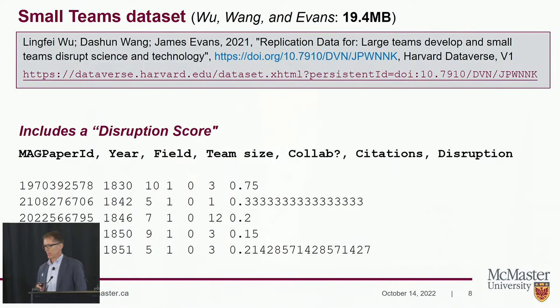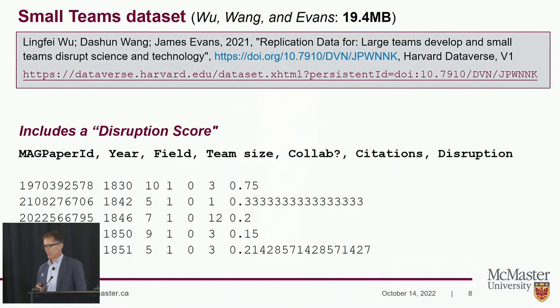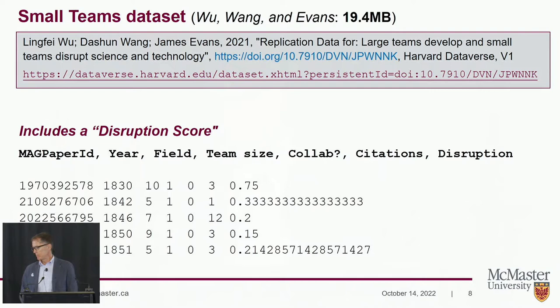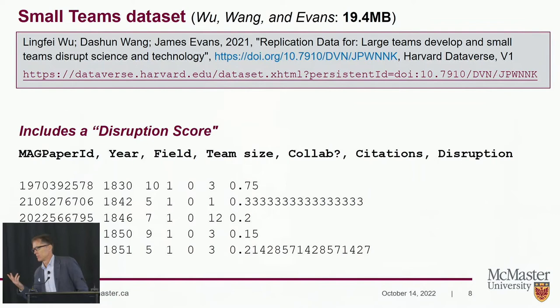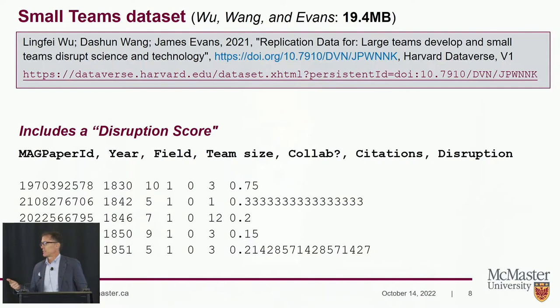Luckily, they have made their dataset open. The small teams dataset is available online — it is 19.4 megabytes, just download it. It's a CSV file with columns for MAG paper ID, the year the article was published, what field it was in with binary indicators, team size, whether it was collaborative, and so on — until the last column gives you the disruption score. That's fascinating, but I have no idea what the title of the paper is, what journal it's in, the page numbers, or who wrote it. I've just got this MAG paper ID. What the heck is that? I've got nothing to go with here — how do I make this relevant to McMaster?